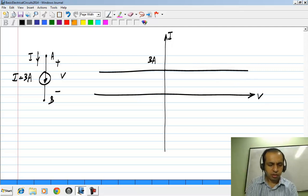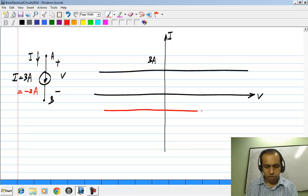Similarly, if in another case this happens to be minus 2 amperes, it will be a horizontal line but below the x-axis where this is minus 2 amperes. That is what a current source does - it maintains a flow of current.